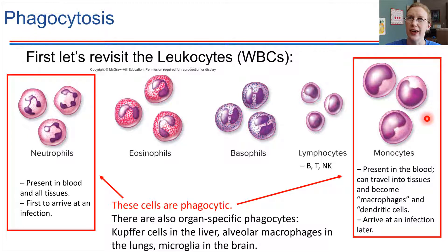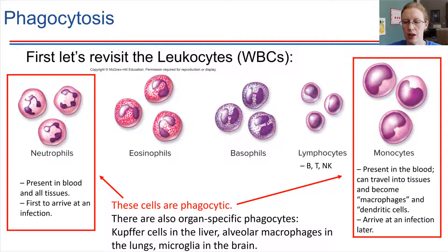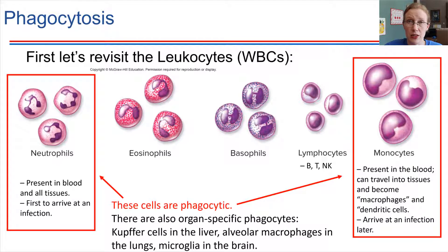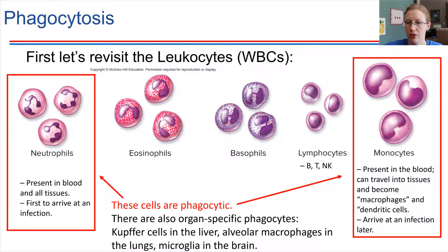Microglia — we mentioned microglia back when we were talking about the nervous system. Microglia hang out in the brain and help to facilitate the health of the brain. They're capable of phagocytosing foreign objects. One other type of cell that is important in the immune system is the mast cells. Mast cells are very important in immune responses. They're quite similar to basophils — they have granules inside and their contents are somewhat similar to what's in basophils. Mast cells are also important in the inflammatory response. We're going to see them later on in this chapter.